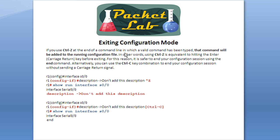This is the big difference between the two keyboard shortcuts for exiting configuration mode. If you use Control Z at the end of a command line in which a valid command has been typed, that command will be added to the running configuration file. Let me repeat that — that command will be added to the running configuration file. In other words, using Control Z is equivalent to hitting the Enter key before exiting. For this reason, it is safer to end your configuration using the end command. Alternatively, you can use Control C to end your configuration session without sending a carriage return signal.